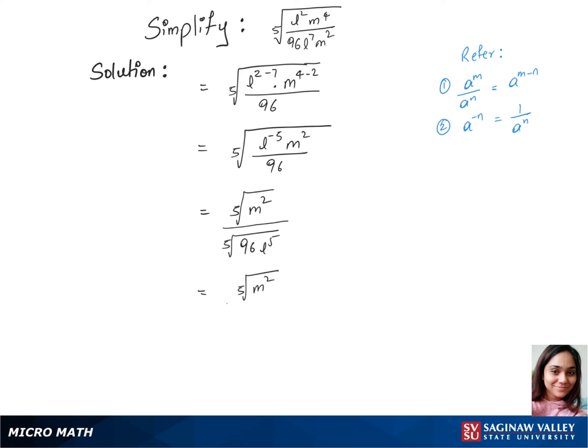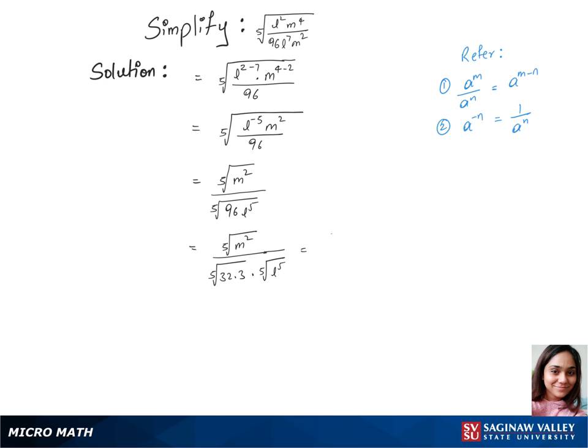We'll separate the fifth root between those terms here. So fifth root of—we can split 96 to 32 times 3—times fifth root of L power 5. In our next step, we have fifth root of M square.